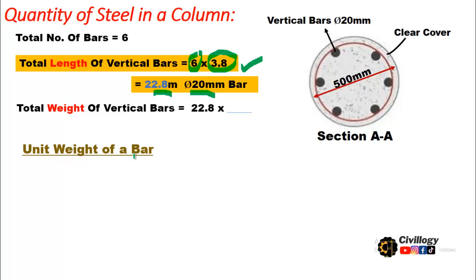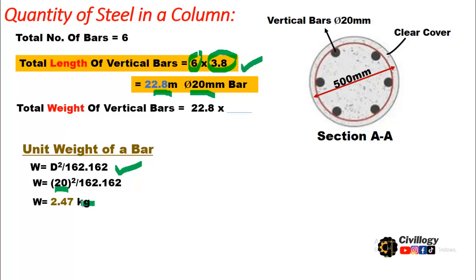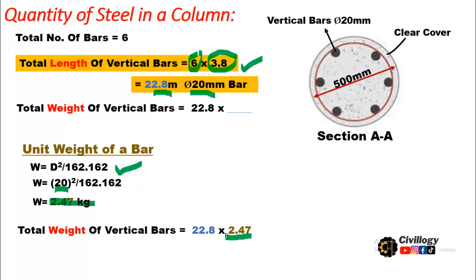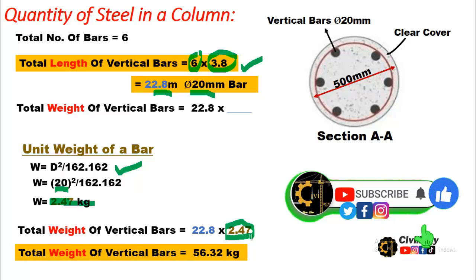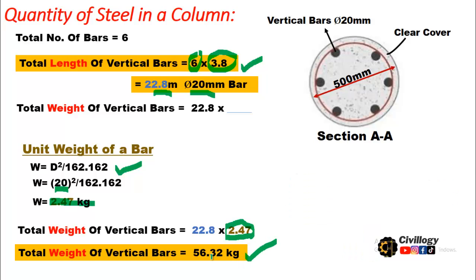The unit weight means the weight of a 1-meter-long bar. The formula for unit weight is d² divided by 162.162. For the 20 mm diameter longitudinal bar: 20² ÷ 162.162 = 2.47 kg per meter. Multiplying this unit weight by the total length of 22.8 meters, the total weight of vertical bars required for this column is 56.32 kg.